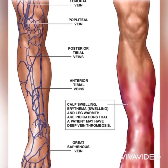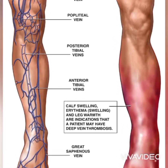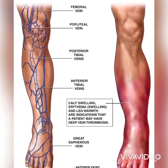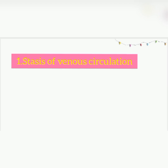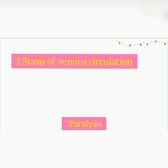Deep vein thrombosis commonly affects the veins of the lower extremities, though it can affect the upper extremities too. Veins susceptible to DVT include the femoral vein of the thigh, the iliac veins of the pelvis, and the popliteal veins. The first factor is stasis of venous circulation — stasis basically means to stop or slow down, so blood is not flowing through the veins as it should. This decreased blood flow can eventually lead to the formation of a blood clot. Conditions that can lead to stasis include atrial fibrillation, prolonged immobility or paralysis, and obesity.